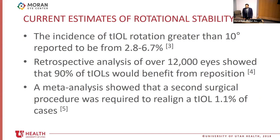Although 30 degrees of rotation would happen in about 20 percent of cases when the first toric lens was made, today the incidence rate is lower. For 10 degrees of rotation, it's estimated to be anywhere from 2.8 to 6.7 percent depending on the type of IOL and material used. A retrospective study analyzing over 12,000 eyes found that 90 percent of toric lenses would benefit from some degree of correction, yet only 1.1 percent are actually operated on, highlighting the importance of correct positioning in primary cataract surgery.